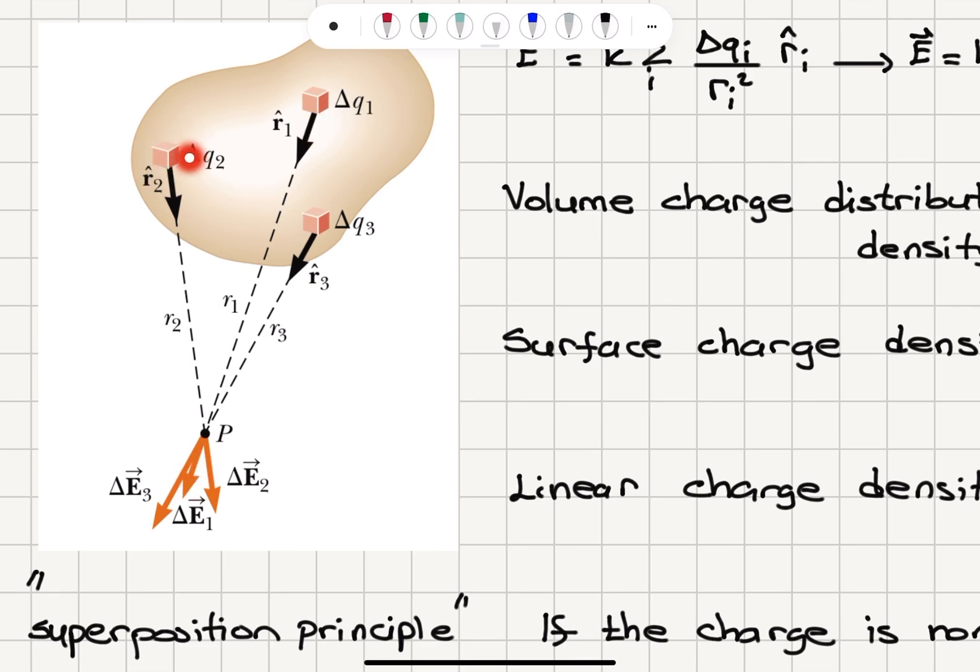Similarly, for delta Q2, which is at a distance R2 from point P, we will have an electric field delta E2 pointing in R2 hat direction. So that's pointing from delta Q2 to